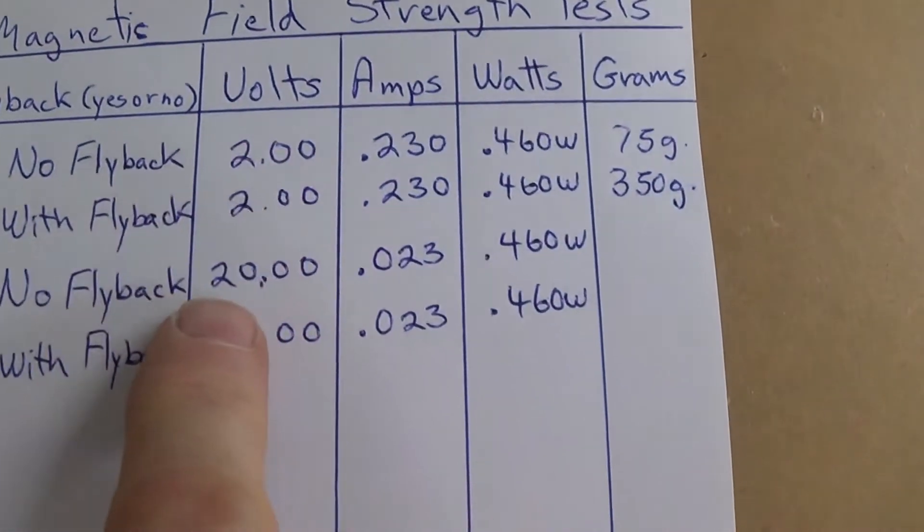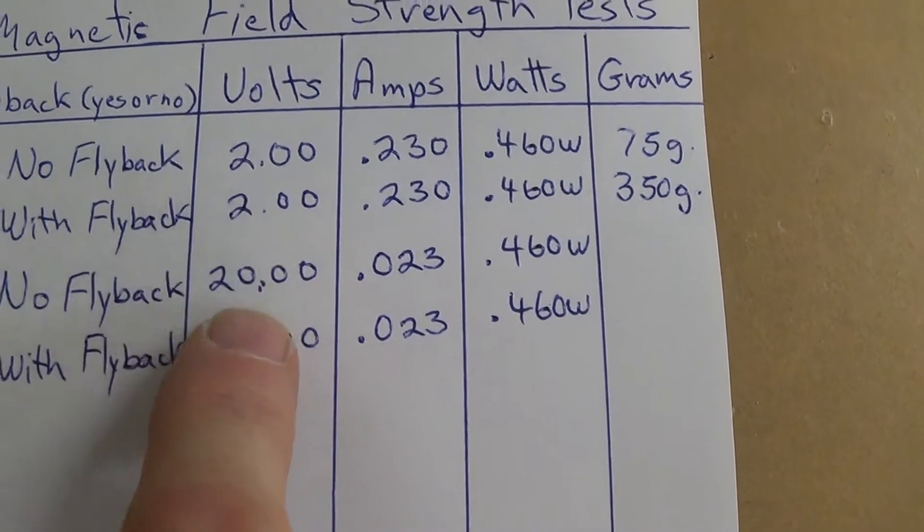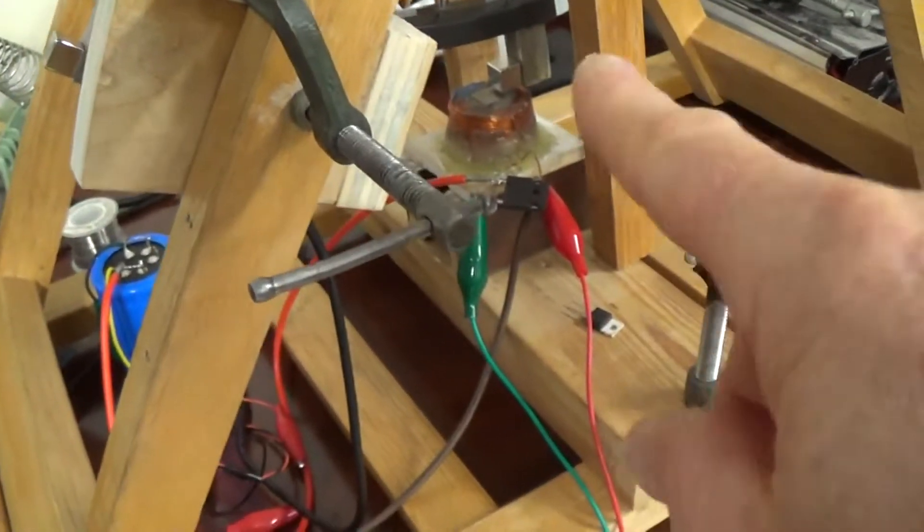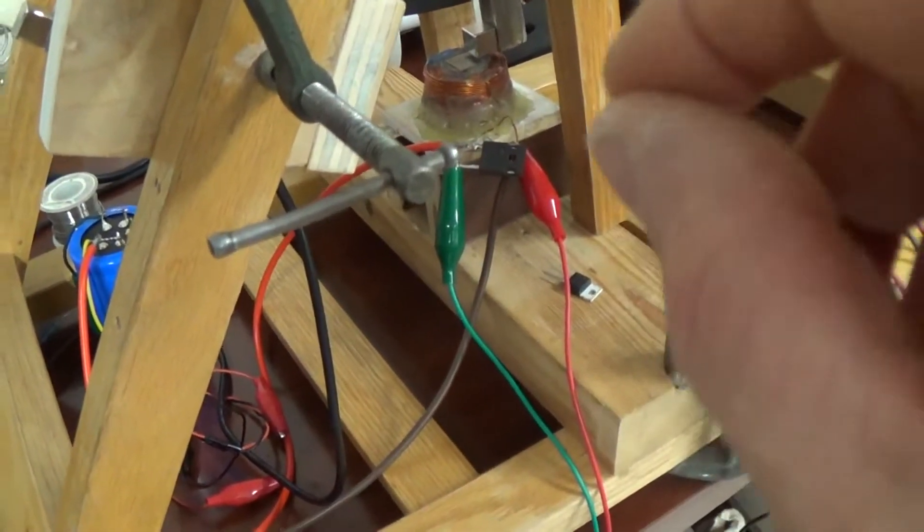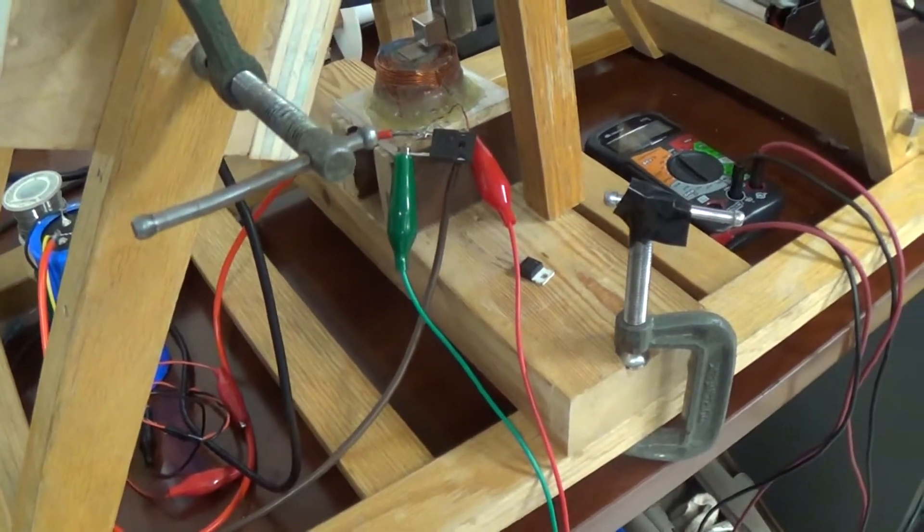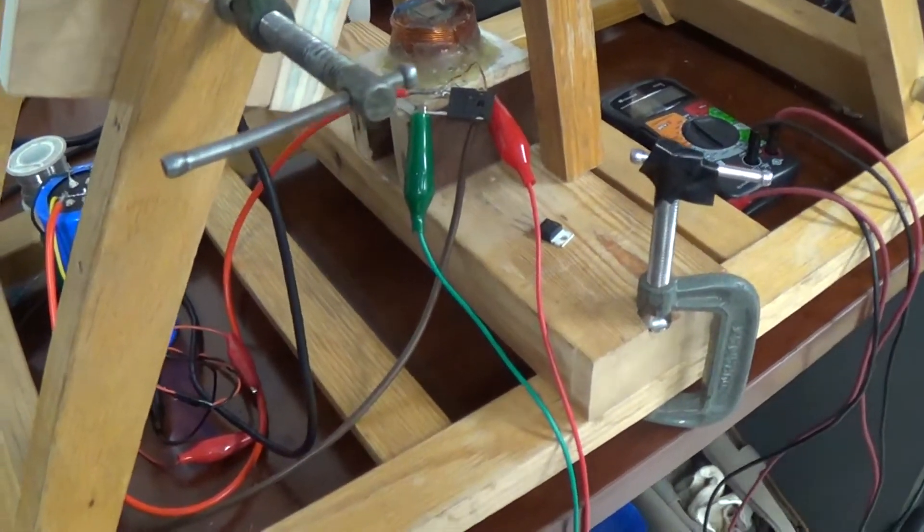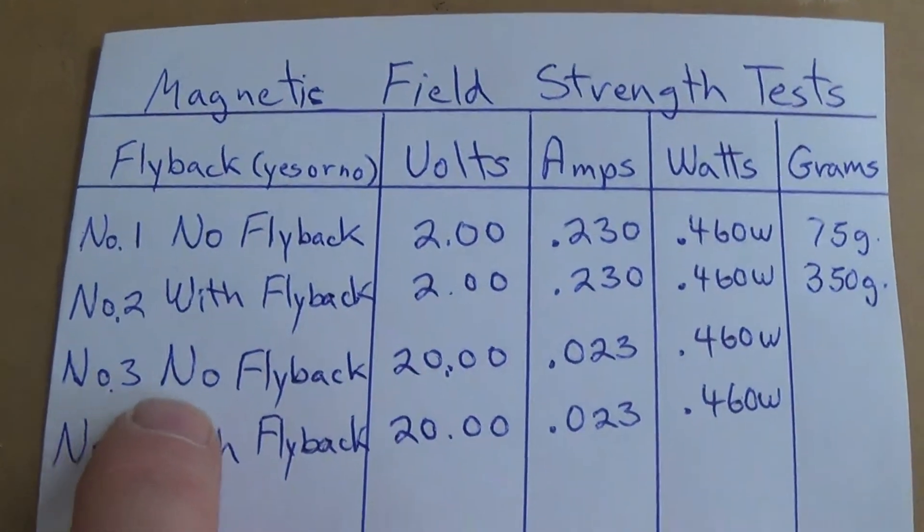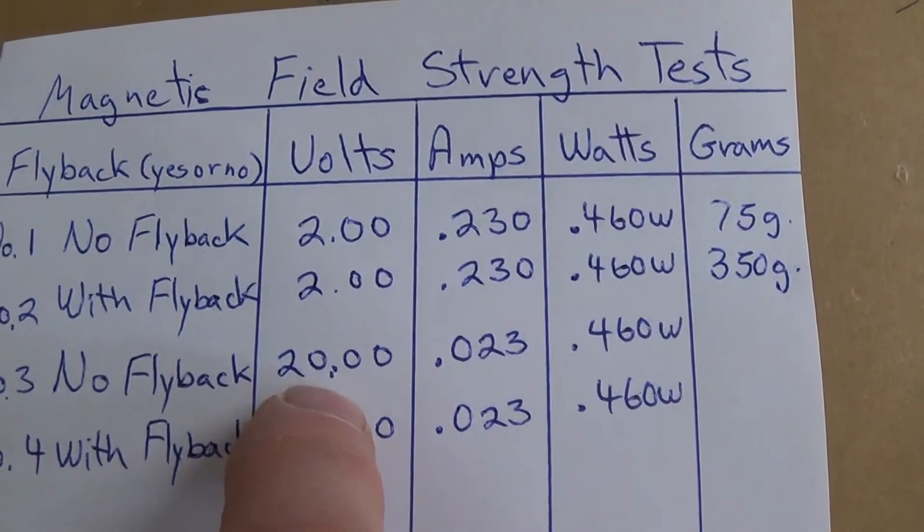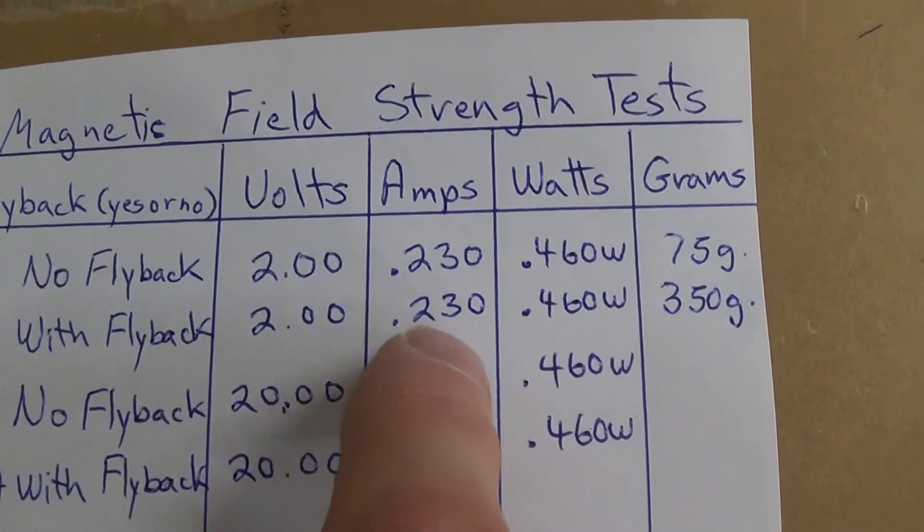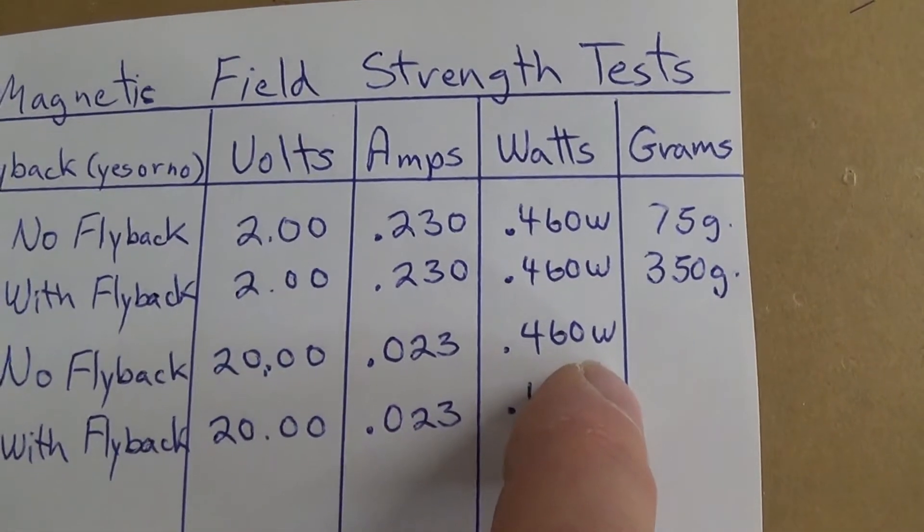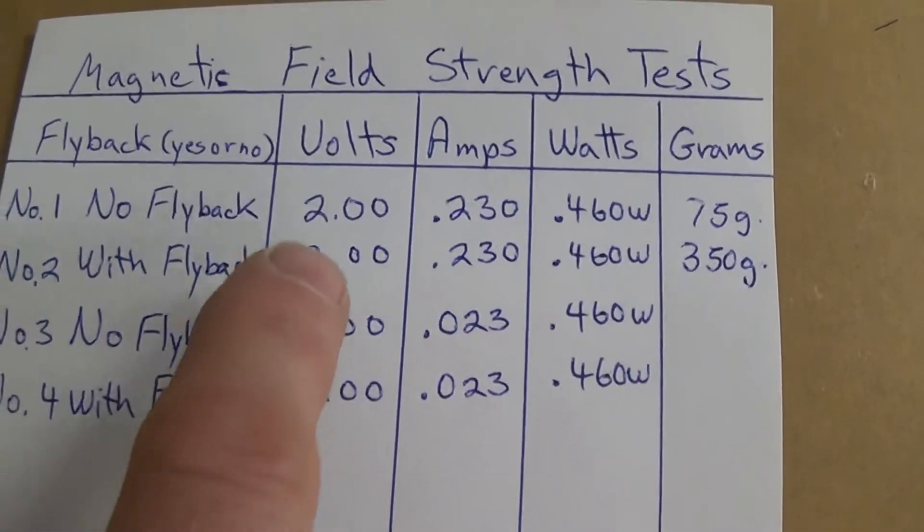Now our next test is we're going to go for high voltage. In my work with this motor here, I've been saying that a higher voltage with a smaller pulse width would give us more work on the flyback. People thought I was kind of losing it, but we'll see how that works out. First we're going to do it with no flyback: 20 volts at 0.023 milliamps instead of 230 milliamps. It comes exactly to 460 milliwatts. I'm going to pause the camera and set it all up for that.